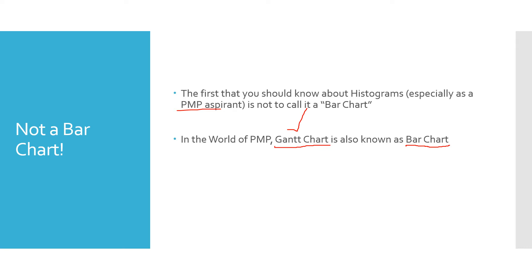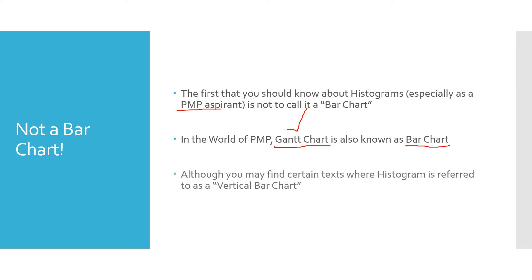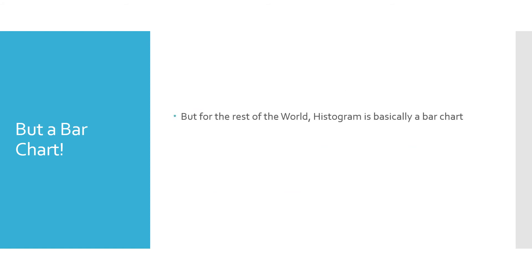A histogram is definitely not a bar chart, although you may find certain PMP texts where a histogram is referred to as a 'vertical bar chart' — the word 'vertical' is added in front to differentiate it from Gantt charts.